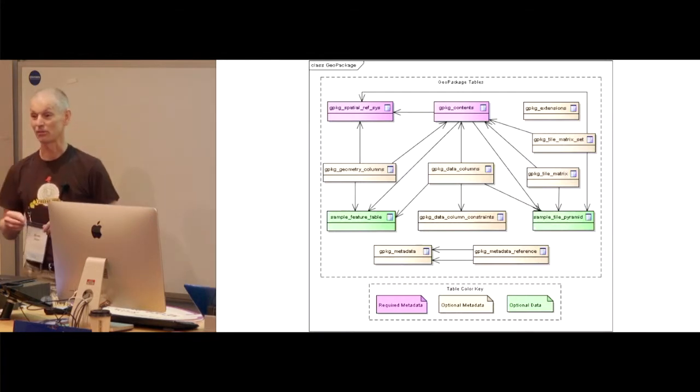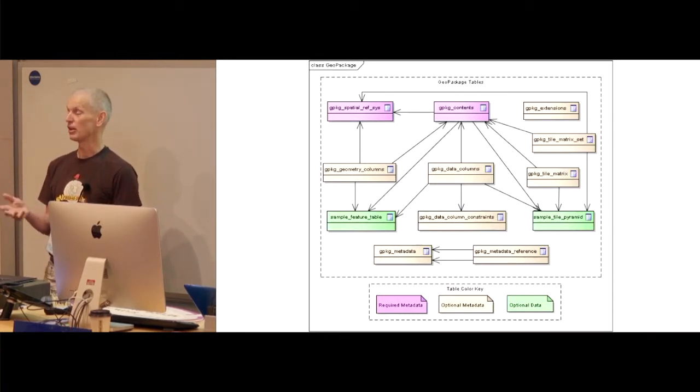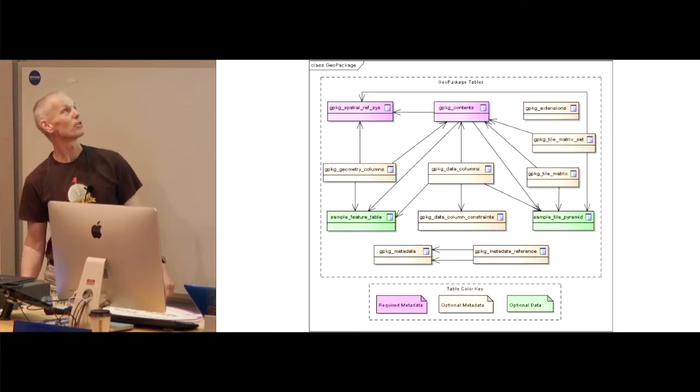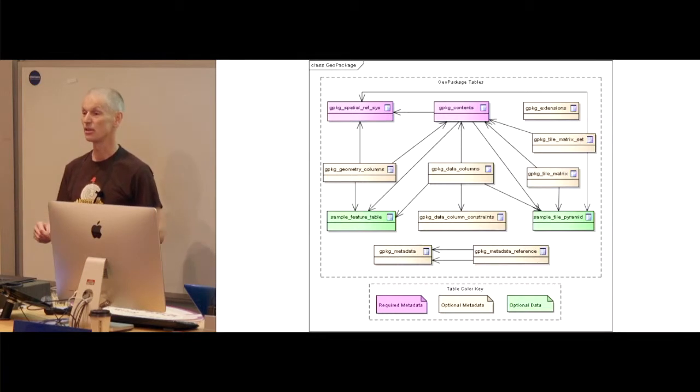So a little bit about GeoPackage. One of the things about GeoPackage is it's not just SQLite. It's SQLite and a set of conventions for how to discover the data that's in your stuff. You can have multiple bits of data. The most important thing in this diagram is the bit at the top where it says GeoPackage contents, because that allows you to discover what you have. The other part worth noting is this idea of extensions. This is an extensible thing.